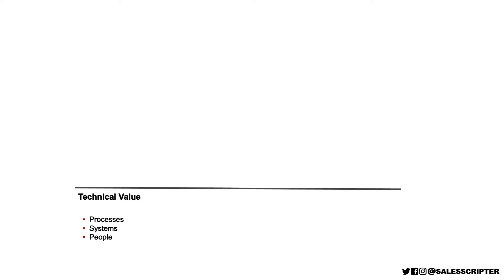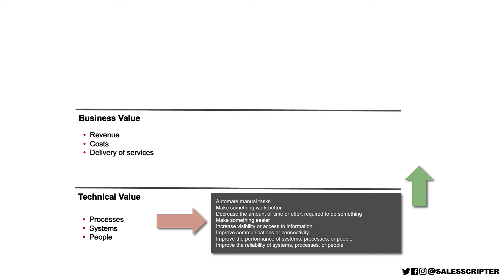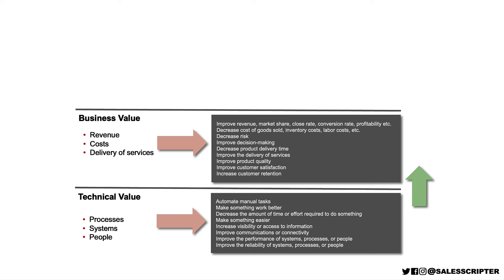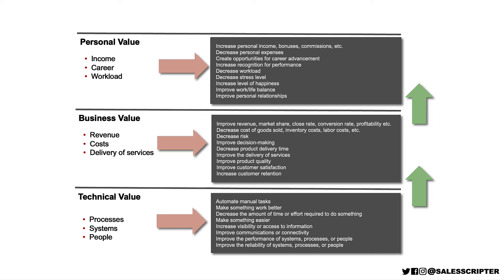At the lowest level, we can deliver technical value — this is how our software can help to improve the processes, systems, or people on the prospect side. For example, we might be able to automate manual tasks, make something work better, make something easier, or improve the access to information or visibility. And when our software delivers technical improvements, that will usually work its way up to create business improvements, such as decreasing costs or increasing the income or revenue for the business. And when our software helps to create business and technical improvements, we can often create personal improvements for the prospect we're actually selling to. So if we're working with the CIO or the VP of technology, when they purchase our software and it creates all these improvements, we can help that VP of IT to have personal improvements like increased personal income from bonuses, career advancement, or decreased workload and improved work-life balance.